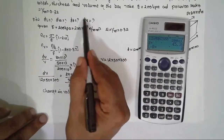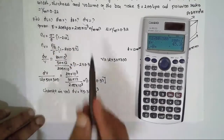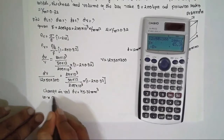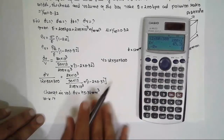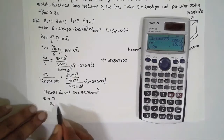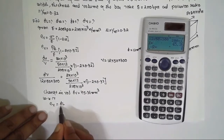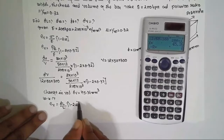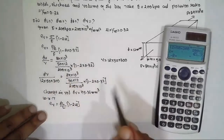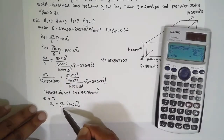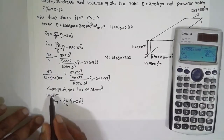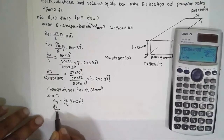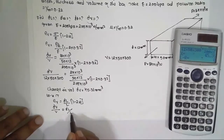Now we have the change in volume. To find ΔL, from the derivation: Ev = (ΔL/L)(1 − 2μ). So ΔV/V = (ΔL/L)(1 − 2μ). Substituting the known values: ΔV / (12 × 50 × 300) = (ΔL/300)(1 − 2μ).